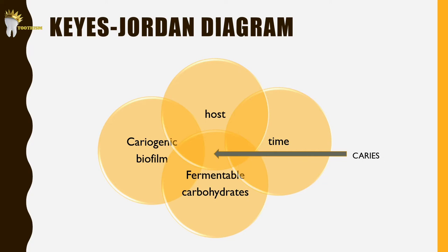To understand the etiology of dental caries, there is a simple diagram called the Keyes-Jordan diagram. Earlier it was called the Keyes diagram when it did not have the 4th factor, which is time. This diagram shows that dental caries results from the interaction of cariogenic biofilm with fermentable dietary carbohydrates on the tooth surface over time. As we saw, this is a multifactorial disease, so there are several other modifying risk and protective factors for dental caries to occur.